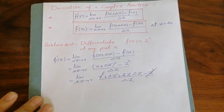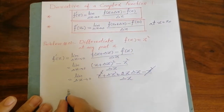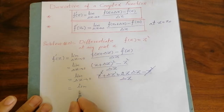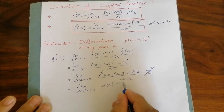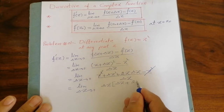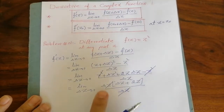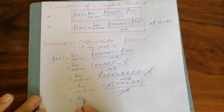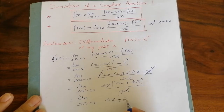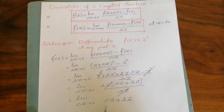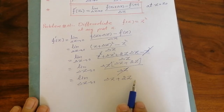Now z square will be cancelled with this one, and let us take delta z as common. So we will get that this is equal to delta z into delta z plus 2z, divided by delta z. Now we can cancel these two delta z terms and we get that this is equal to delta z plus 2z. Now just put delta z equal to zero and you will get that the answer is 2z.